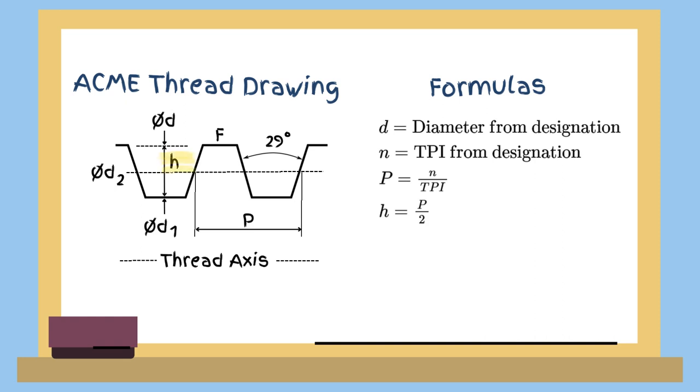The profile height, H, equals half the pitch. The pitch diameter, D2, equals the nominal diameter minus the height. The minor diameter, D1, is the nominal diameter minus the pitch.